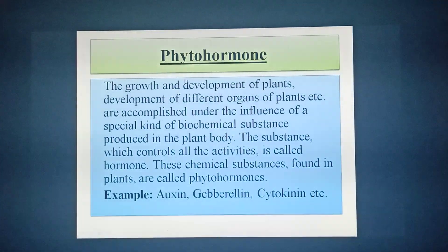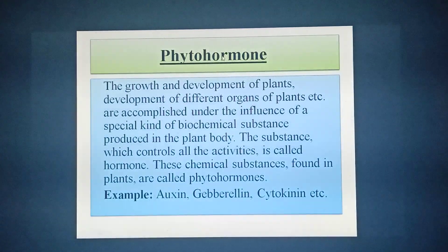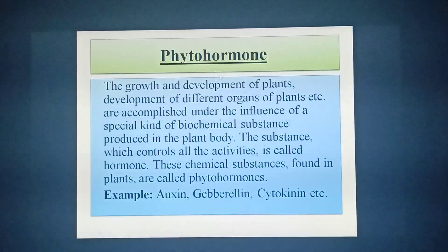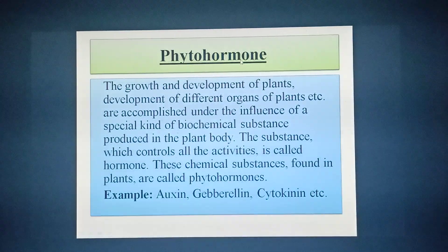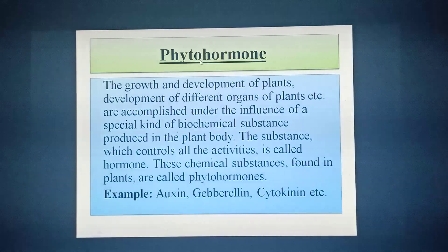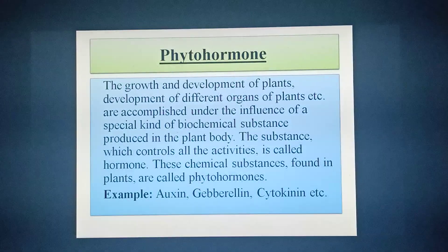The topic is phytohormone. The word phytohormone is derived from two words: one is phyton and another is hormone. The word phyton means plant, and hormone means chemical messenger. So phyto means plant, hormone means chemical messenger. The chemical messenger or chemical component which controls the different events of the stages of the plant body is called phytohormone. Some phytohormones are auxin, gibberellin, cytokinin, ethylene, and florigen. These phytohormones control the different stages of the plant body.